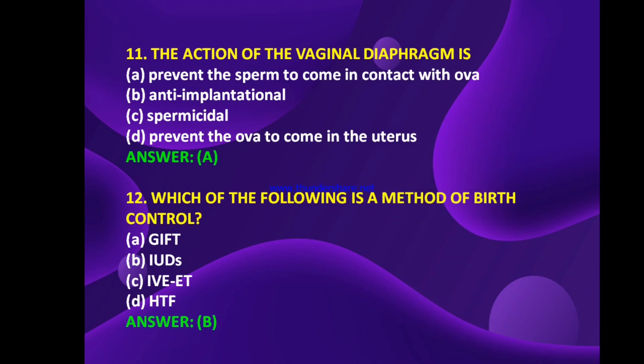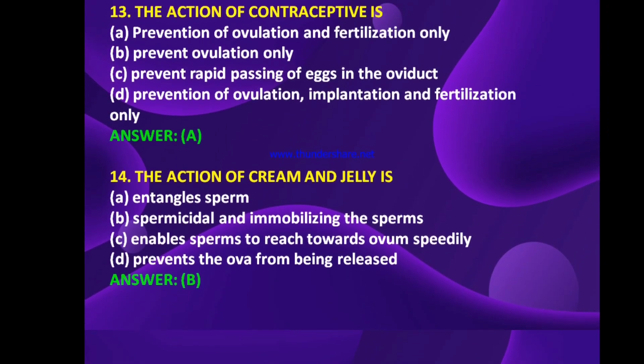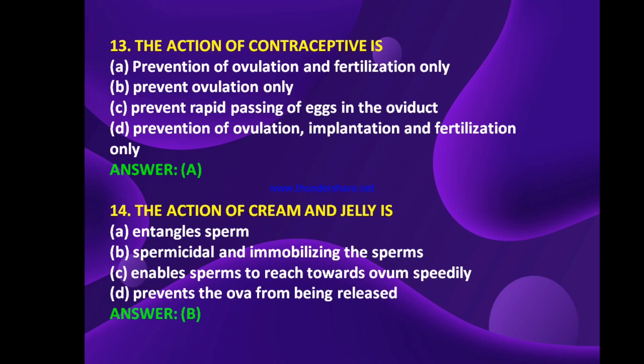Which of the following is a method of birth control — GIFT, IUDs, IVET, or HTF? The answer is B — IUDs, that is intrauterine devices. The action of contraceptives is prevention of ovulation and fertilization only, prevent ovulation only, prevent rapid passing of eggs in the oviduct, or prevention of ovulation, implantation, and fertilization. The answer is A — prevention of ovulation and fertilization only.